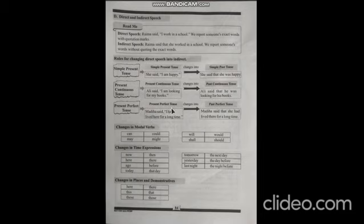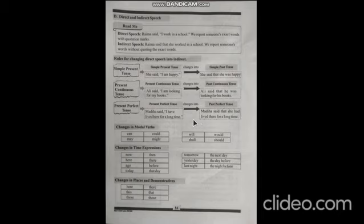Present perfect tense example: 'Madeeha said, I have lived here for a long time.' In indirect speech: Madeeha said that she had lived there for a long time. 'Have' changes to 'had' (past perfect helping verb), 'I' changes to 'she', and 'here' changes to 'there'. The main verb 'lived' (third form) stays the same.